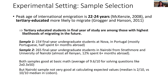Both samples were equally good at basic math, although the Nairobi sample was not as strong at calculating expected values.